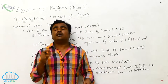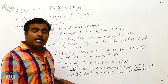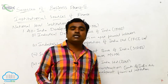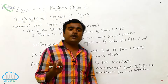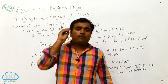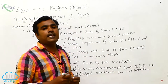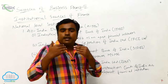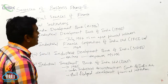When it comes to state level institutions, they mainly concentrate on medium and small scale industries. Even though the objectives differ between national level and state level institutions, ultimately both aim to provide adequate finance to industries. That is their main objective.